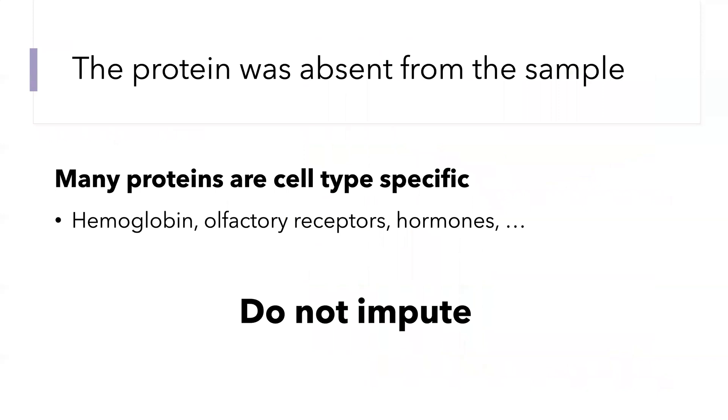Another reason why the value might be missing is that the protein wasn't there to begin with in the sample. Many proteins are expressed only in some cell types, such as hemoglobin in erythrocytes and hormones expressed only by specialized cells. This is a wonderful example of a case where we don't want to impute the data.